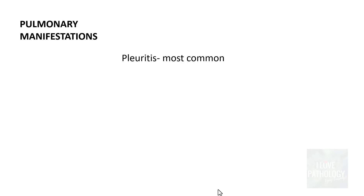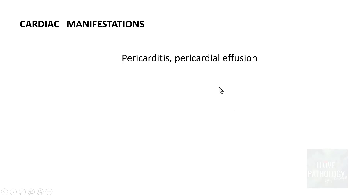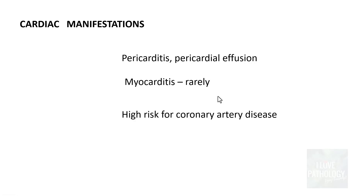For lung involvement, pleuritis — that is, involvement of the pleura — is the most common manifestation. It can also present as pleural effusion or pneumonitis. Very rarely, usual interstitial pneumonia or diffuse alveolar damage can occur. For cardiac manifestations, the most common are pericarditis and pericardial effusion. Very rarely, myocarditis occurs, and these patients have a very high risk of developing coronary artery disease.